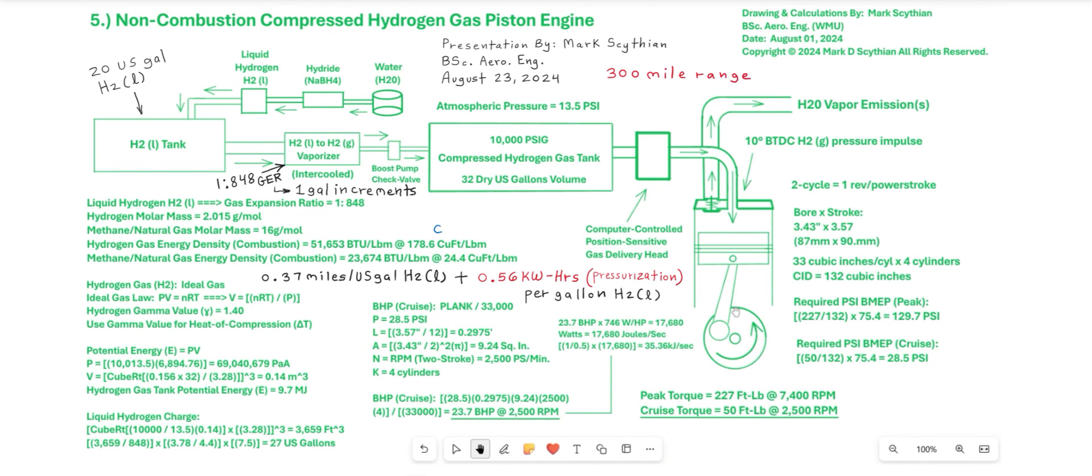So if we wanted to get 300 mile range we would need 8.108 gallons of liquid hydrogen plus 4.54 kilowatt hours.